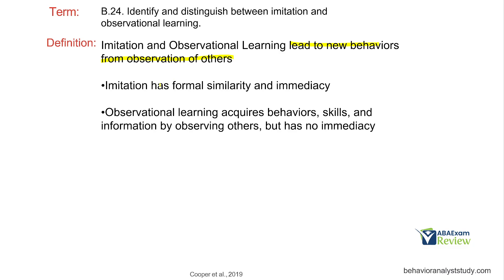There are some key differences. Imitation has formal similarity and immediacy — and we really want to focus on that idea of immediacy. Imitation happens right away. With observational learning, we're learning behaviors and skills, but the skill does not happen immediately. You can observe someone playing tennis, and then a week later go and try to put into play what you watched. That immediacy is the key separator between these two things.